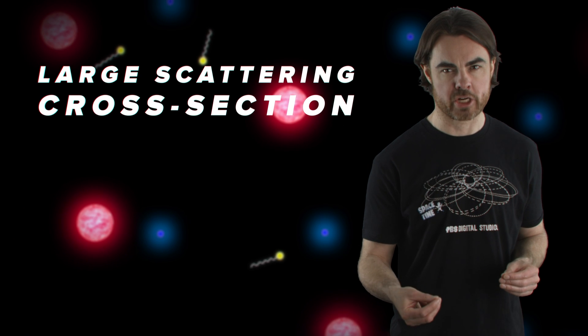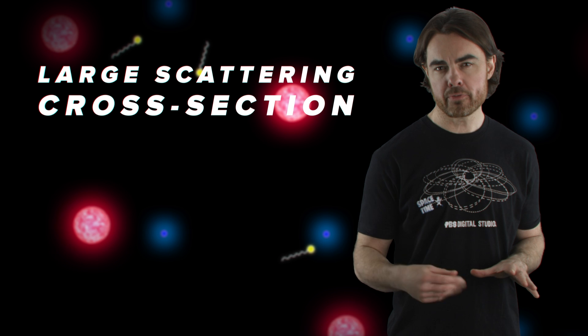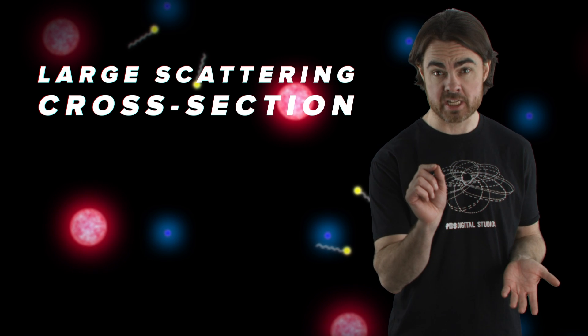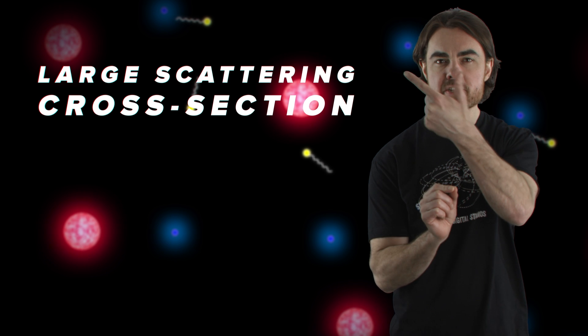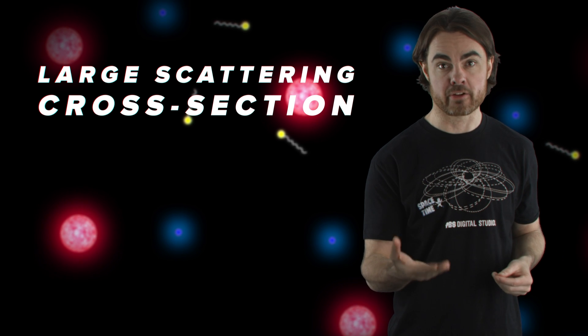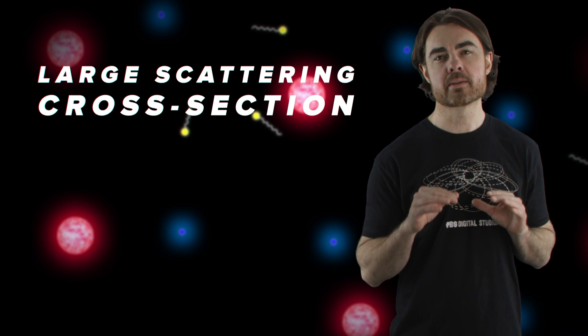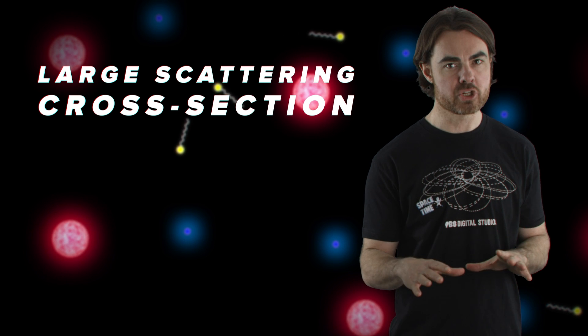See, free electrons are really good at getting in the way of photons. They have what we call a large scattering cross section, which means that even though the electrons themselves are infinitesimally small, photons don't have to get too close before they interact via the electromagnetic force.